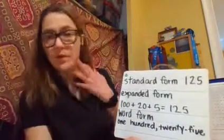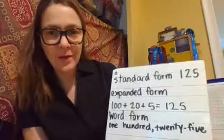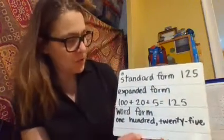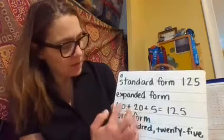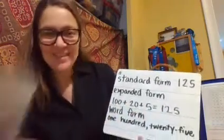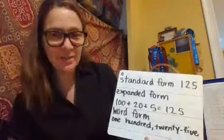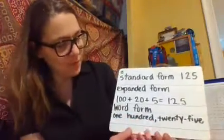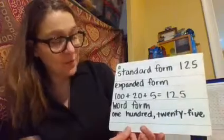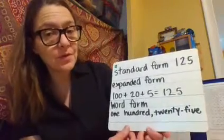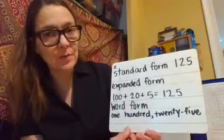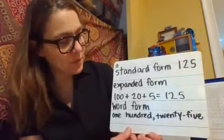Expanded form — you've had some practice with expanded form when we used the strategy of partial sums. You put it into the place value: hundreds, tens, and ones. And then word form. Word form is just going to take some practice — practicing writing out the words. It takes the longest but it's important to know how to spell them all and how to write them.